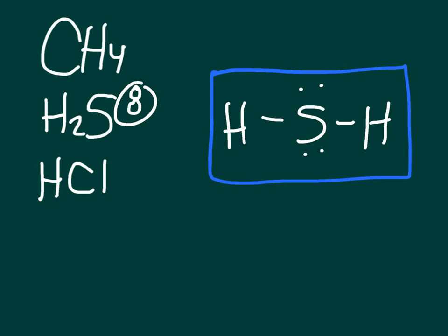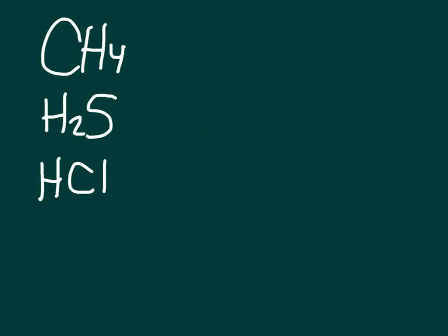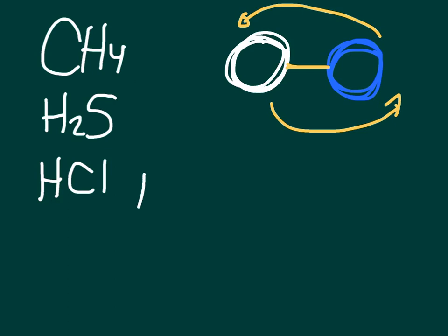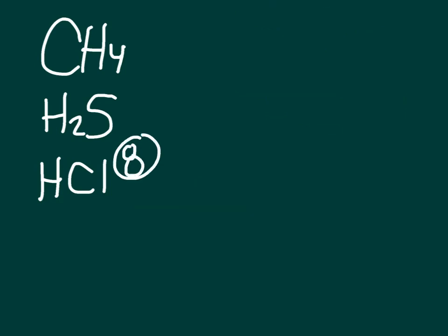Let's move on to HCl. What is my central atom? I don't have one. If I only have two elements, there is no central element — it doesn't matter. Moving to step two: count valence electrons. Hydrogen is one, chlorine is seven — that adds up to eight. I'll put that where I can't forget it, and start off with just a single bond like this: HCl.